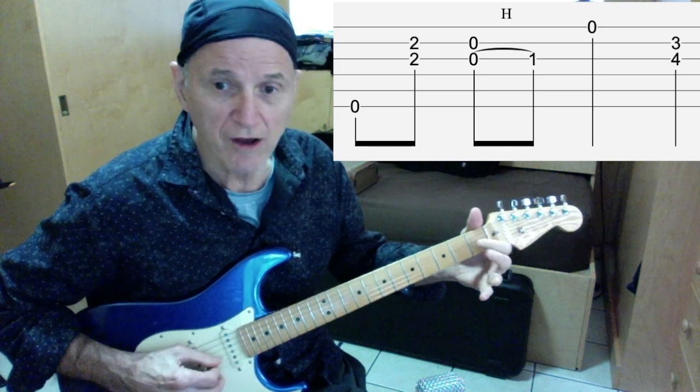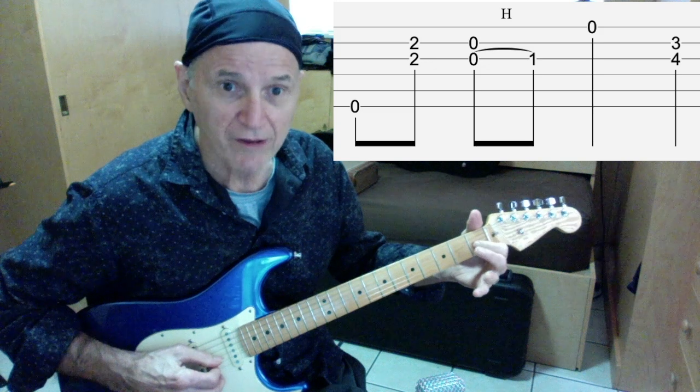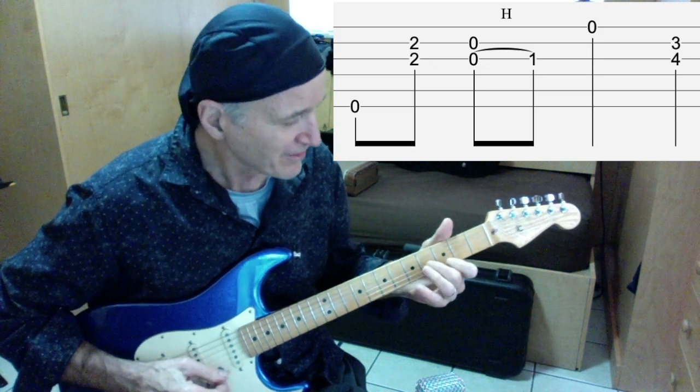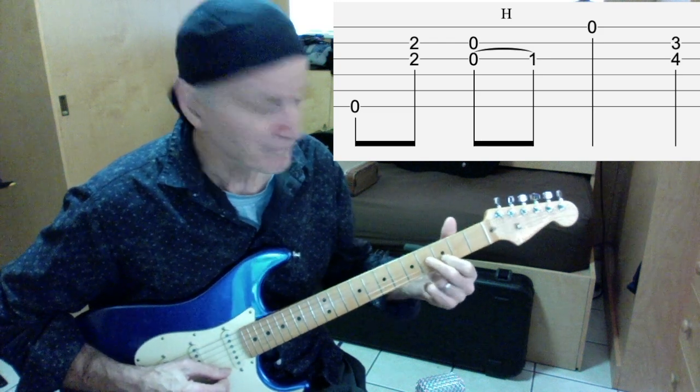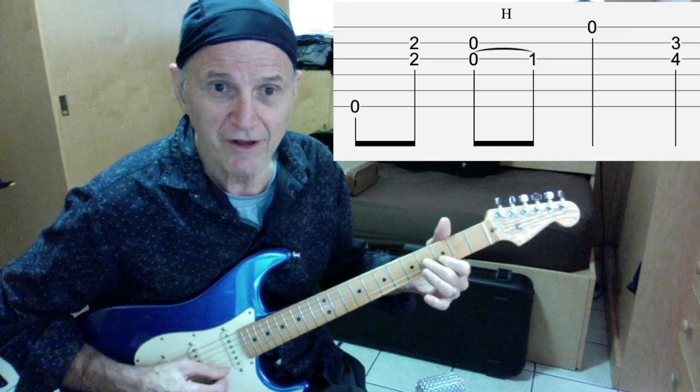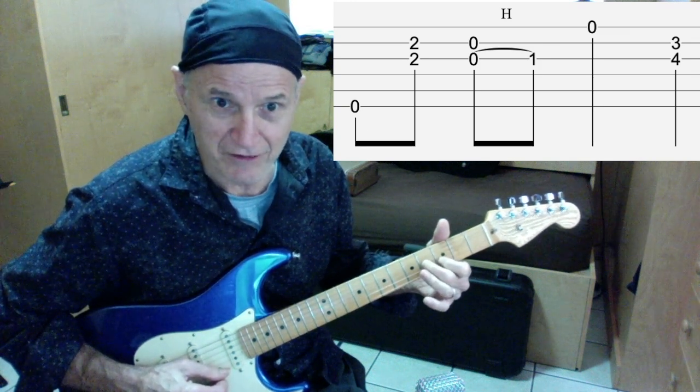The third string, zero to one, and I'm hitting the second string also, first fret open. Then I'm going to go right here - first finger on the second string third fret, second finger third string fourth fret. We've done that before in previous videos as you may recall.